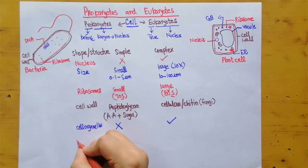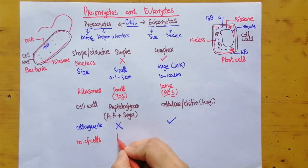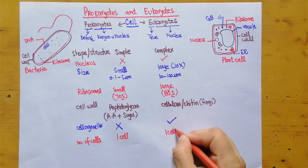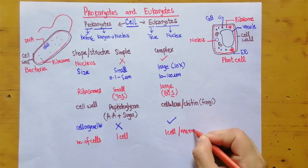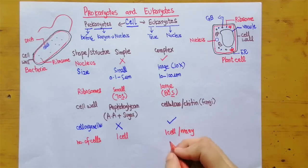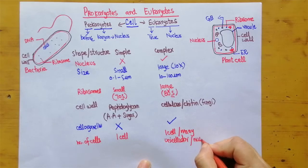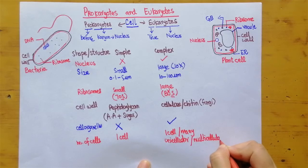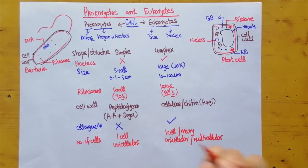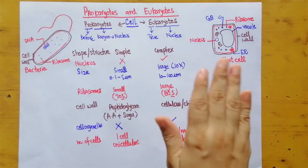What about the number of cells? Prokaryotes consist of just one cell, like bacteria — they are always unicellular. Eukaryotes, however, may be unicellular or multicellular; plant cells and animal cells can combine together to make tissues.